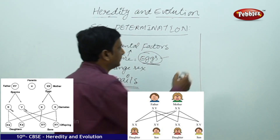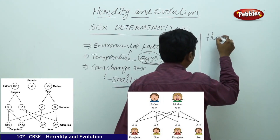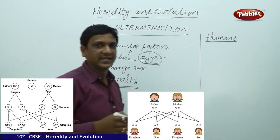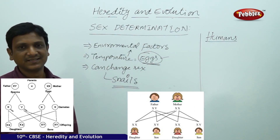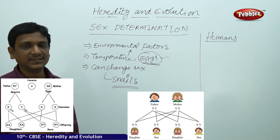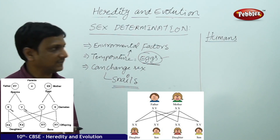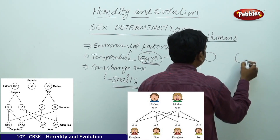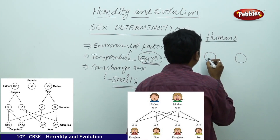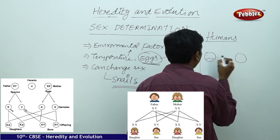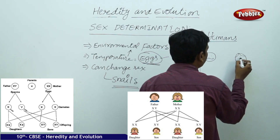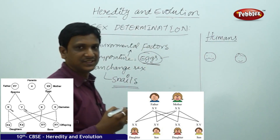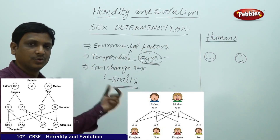Let us talk about humans — how the sex is determined in humans. In humans, the sex determination takes place purely by genes, depending upon the genes acquired from both mother and father. As we have discussed earlier, father and mother each have two sets of genes, two sets of chromosomes.